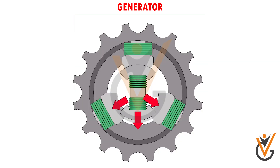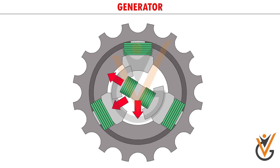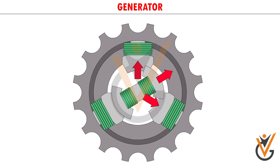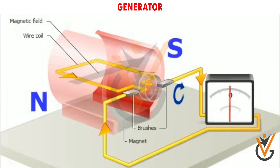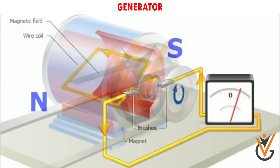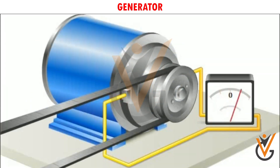When the coil rotates, it cuts the magnetic field which lies between the two poles of the magnet. The magnetic field will interfere with the electrons in the conductor to induce a flow of electric current inside it. This is how electricity is generated.